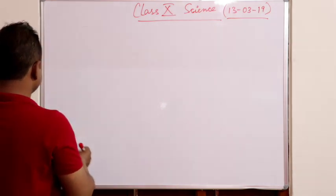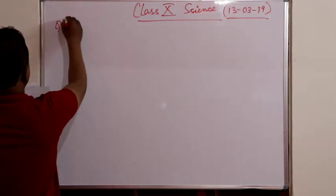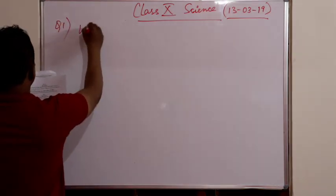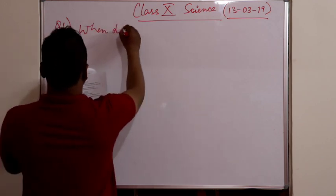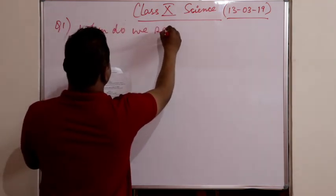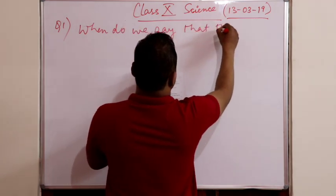In this regard, the first question that was given is question number one: when do we say that the potential difference between two points of a circuit is one volt?